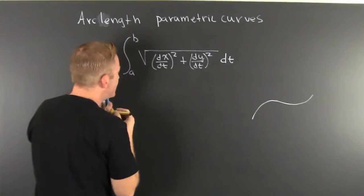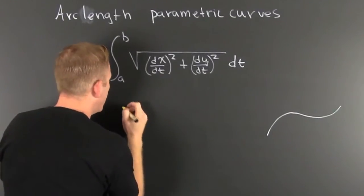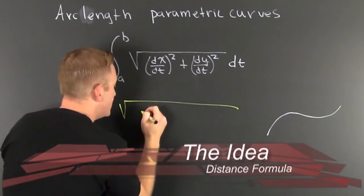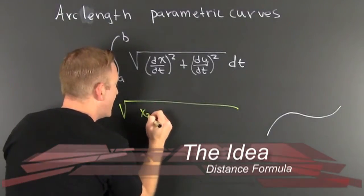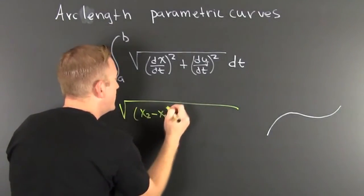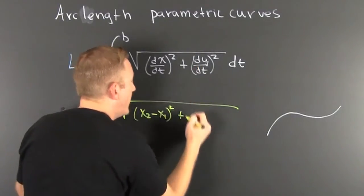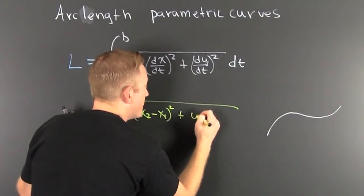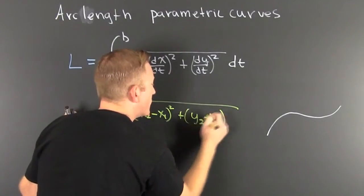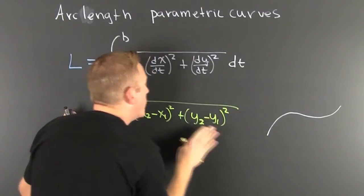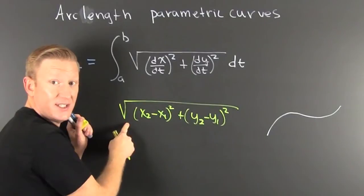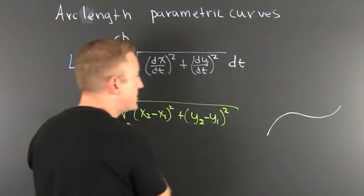What is it adding? If we take a look in here, this is the square root of the change in x with respect to t. You can see it is x₂ minus x₁, squared plus y₂ minus y₁ squared. What is this? This is the distance formula.